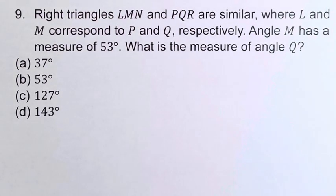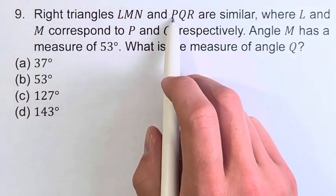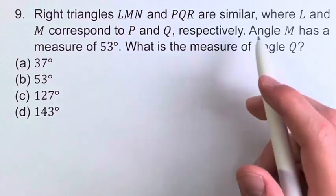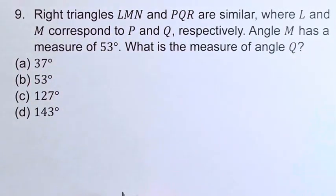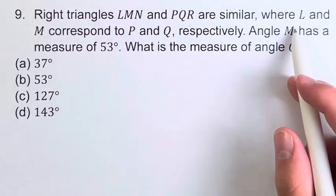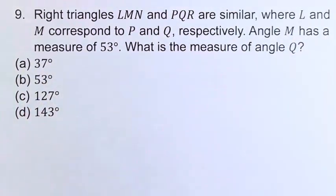Hello and welcome back to another video. In this problem, we're told that right triangles LMN and PQR are similar, where L and M correspond to P and Q respectively. And we're told that angle M has a measure of 53 degrees, and we're asked what is the measure of angle Q.